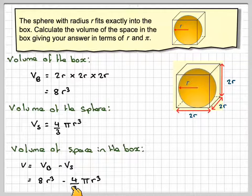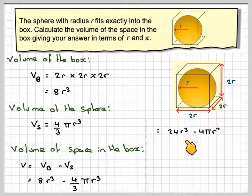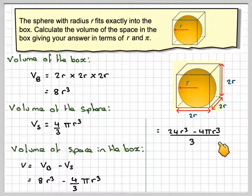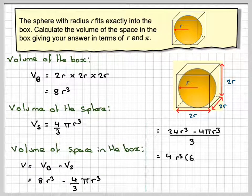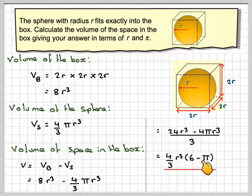Now, in order to get a common denominator of 3, we need to multiply that 8 by 3. So we're going to get 24r cubed minus 4 pi r cubed over 3. There's a common factor of r cubed, and there's a common factor of 4. And that will be left with 6 minus pi, and that 3 will come out.